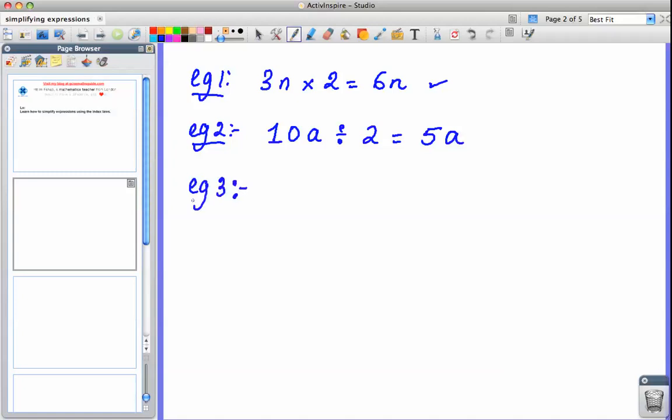Example number 3. Let's say now we had something like m multiplied by another m. We know for a fact using the index law when you multiply two same base, in this case we've got m and we have an invisible one, then it becomes m to the power of 2.